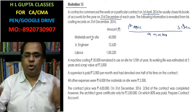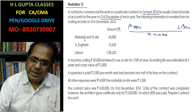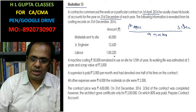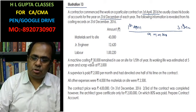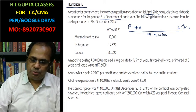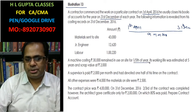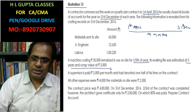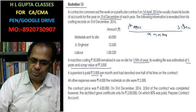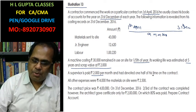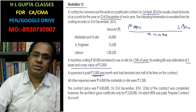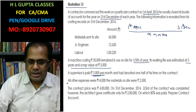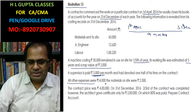What are the costs incurred for the work? Material: Rs. 43,000. Junior Engineer: Rs. 12,620. Labour: Rs. 1,220. A machine costing Rs. 30,000 was used on the site for one-fifth of the year, and its working life was estimated to be 5 years with a scrap value of Rs. 2,000. A supervisor is paid Rs. 2,000 per month and has devoted 1.5 months of time on this contract.